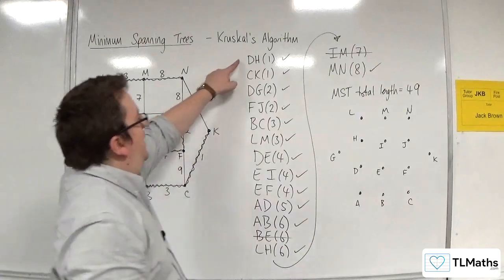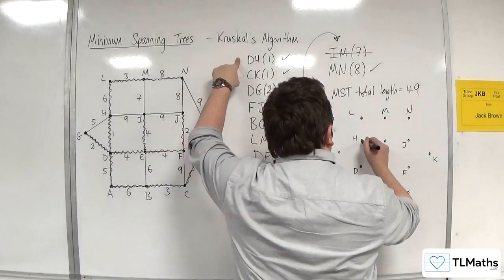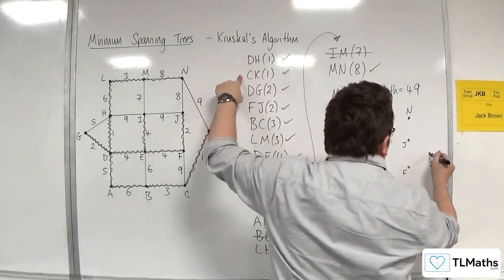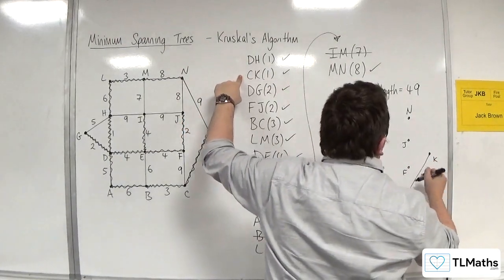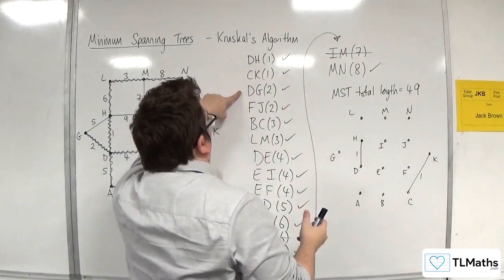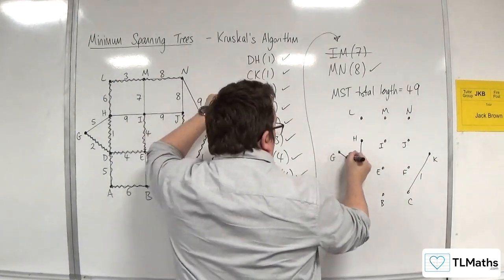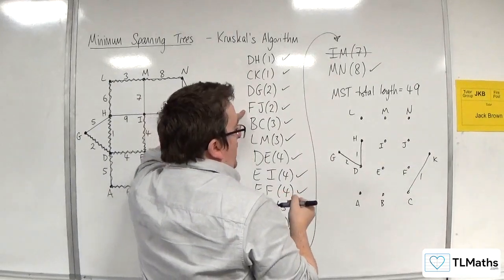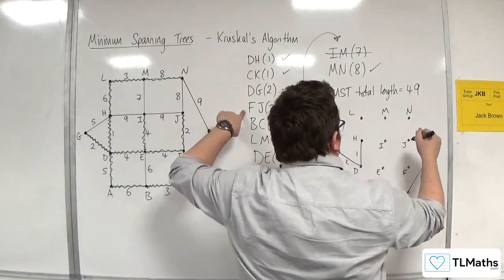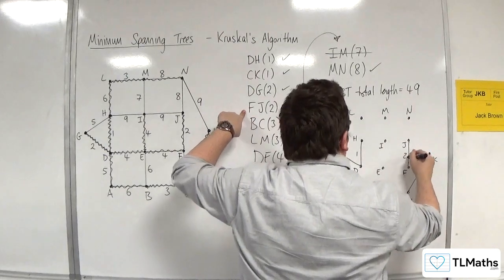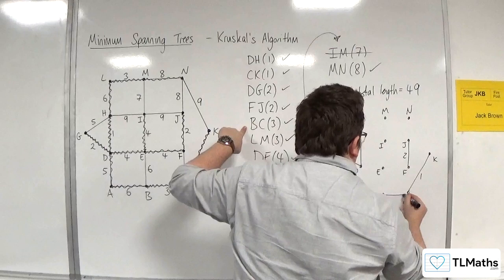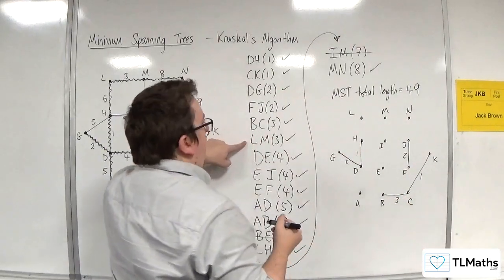So we've selected DH with weight 1, then CK. Notice how the edges are springing up and how it builds. So DG is 2, FJ is 2, FJ there 2, BC is 3, LM is 3.